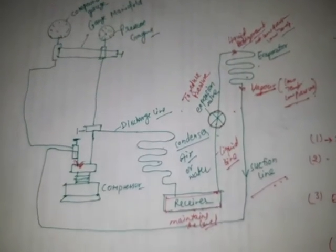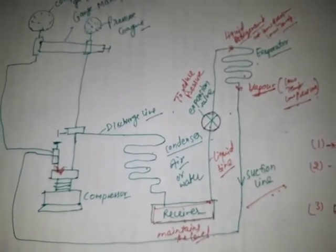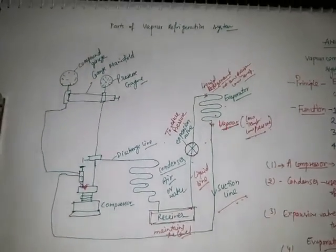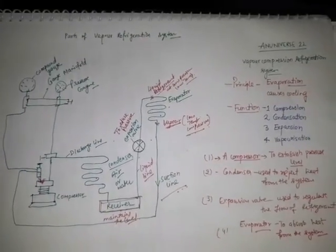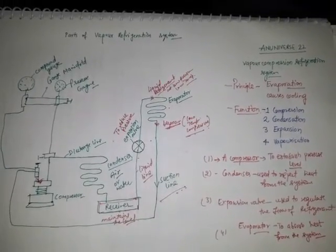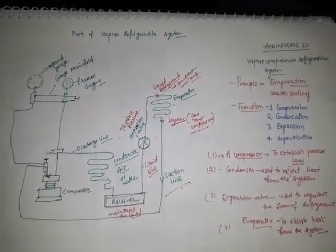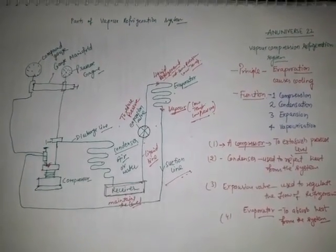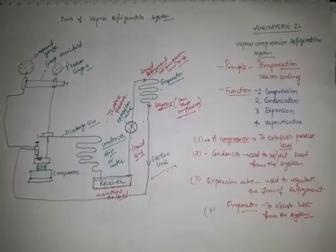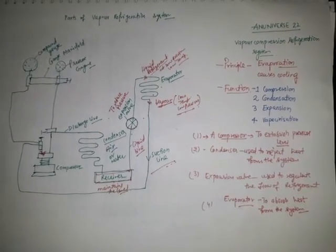This is the cycle completing — again from the compressor it increases the temperature and pressure, and through the discharge line passes through the condenser. In this video we have learned about what is vapor compression refrigeration system, its principle, functions, necessities, and how the complete cycle takes place for producing the refrigeration effect. If you like this video, share it with your friends and students. Thanks for watching, have a nice day.